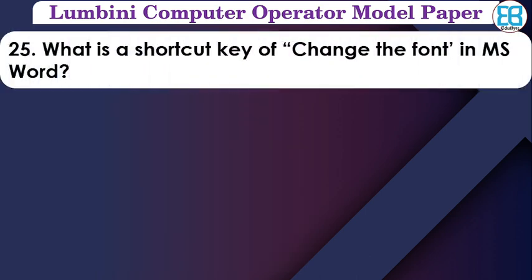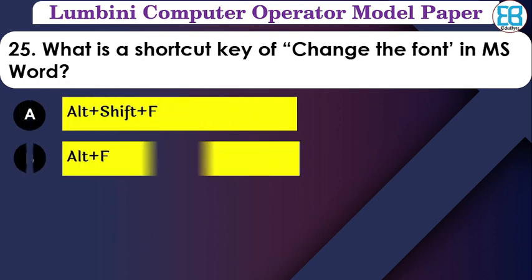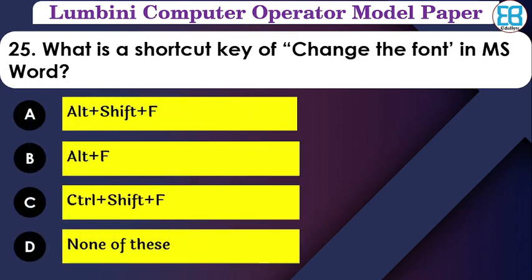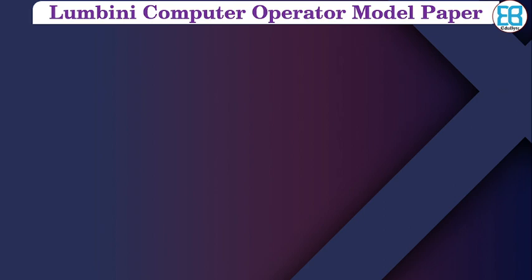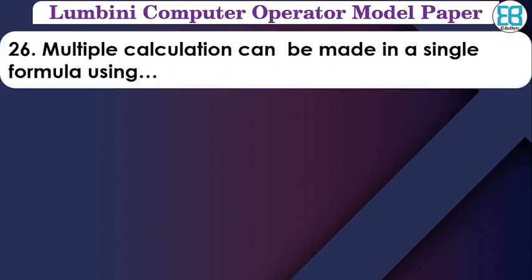What is the shortcut key to change the font in MS Word? The options are: Ctrl+F, Alt+F, Ctrl+Shift+F, one of these. The correct option is Ctrl+Shift+F — that is the shortcut key to change the font in MS Word.